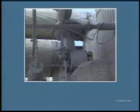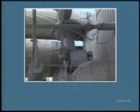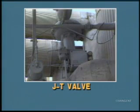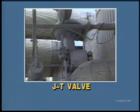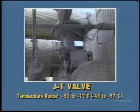In pressure reduction, a pressure reducing valve called a JT valve reduces the pressure of the gas stream. The reduction in pressure causes a reduction in temperature in the range of minus 50 degrees to minus 70 degrees Fahrenheit.